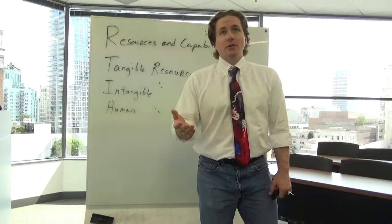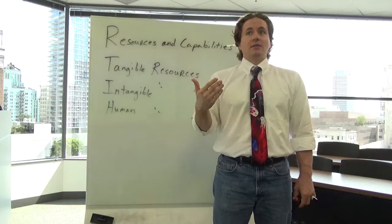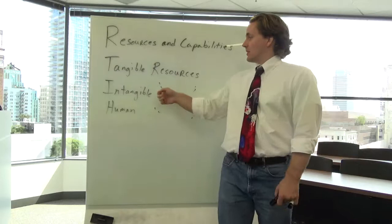On the intangible resources side, you could look at technology - patents, copyrights, know-how, research and development facilities, technical and scientific employees. And the indicator would be things like the number of patents owned, royalty income, R&D expenditure, R&D staff.